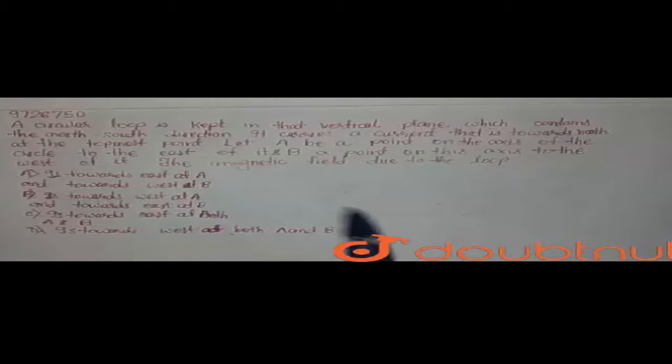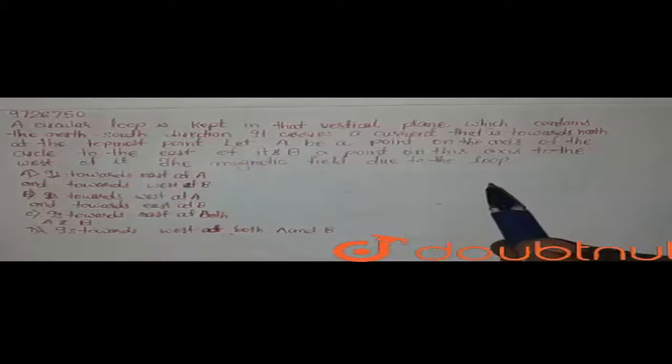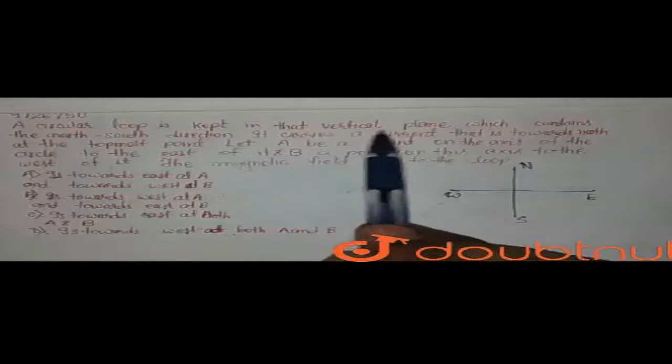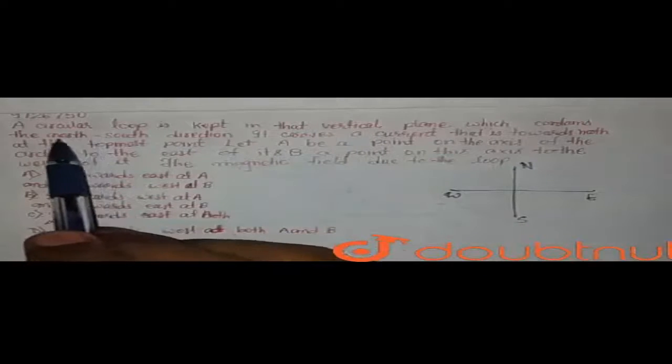This means we need to find the magnetic field direction. You can see the loop arrangement here. I will draw it like this. This is north and this is south. This is east and this is west. They said that it contains the north-south direction — a vertical plane and circular loop. So we can consider a loop arranged like this.